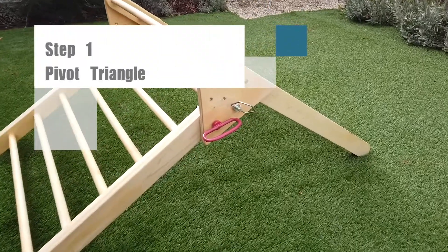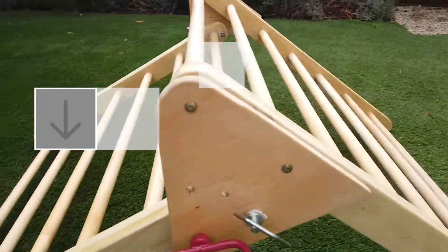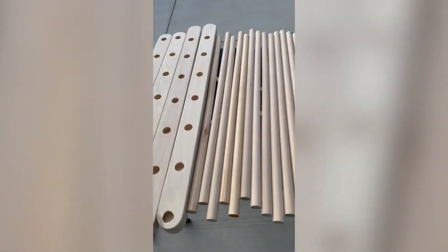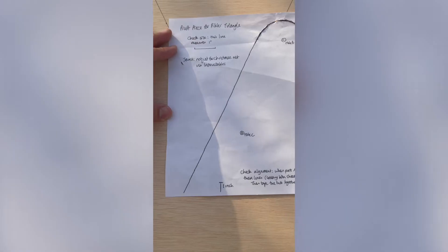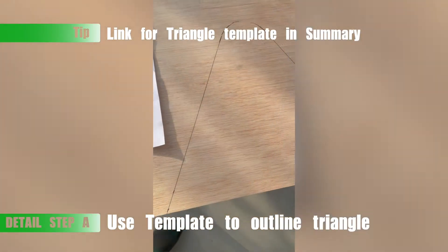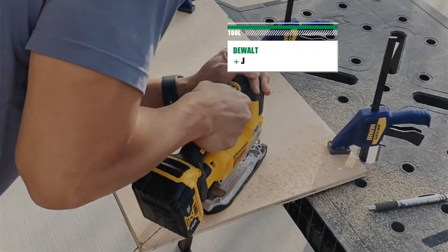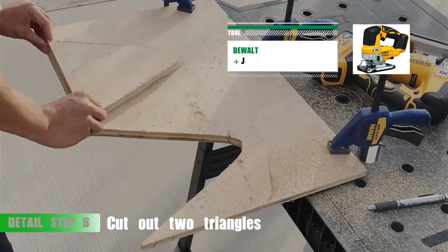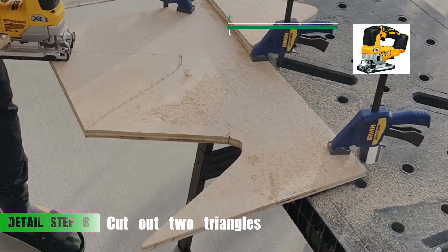Step 1, let's focus on the pivot triangle. Now let's look at it amongst the other pieces and really focus on what we need to do. In the first detailed step, use the template provided in the summary to create the triangle with pilot holes for the assembly. Once the outline is drawn, cut out two triangles for the project. Side note, I'm using ¾ inch birch plywood for this.